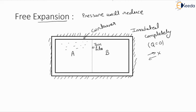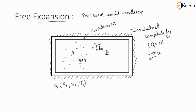Suppose the side A of the container is completely filled with a high-pressure gas, and the properties of the gas are considered as p1, v1, and temperature t1. This represents the properties of the gas on side A of the container. Side B of the container is completely evacuated, or completely empty.